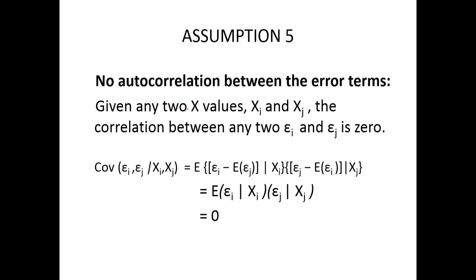Non-autocorrelation between error terms. So there should not be autocorrelation or correlation between the error terms. If there are two error terms ei and ej, they should not be correlated among themselves for the given x.